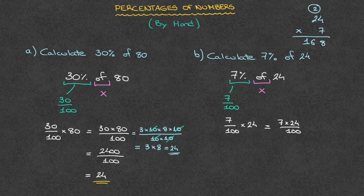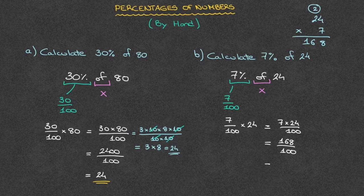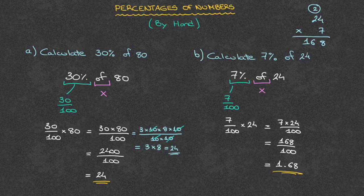Going back to our fraction, that's equal to 168 over 100. To state our final answer, all we need to do is divide 168 by 100, which equals 1.68. So 7% of 24 is equal to 1.68. And there we have it — that's how we can calculate percentages of numbers by hand.